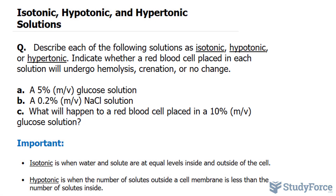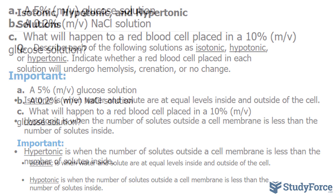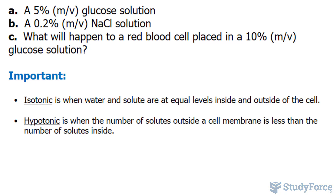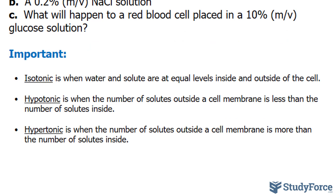The first one we'll look at is a 5% mass per volume glucose solution. It's important that we know the definition for these three words. Isotonic is when water and solute are at equal levels inside and outside the cell — the cell is at equilibrium and we expect no change. A hypotonic solution is when the number of solutes outside the cell membrane is less than that found inside the cell. And hypertonic is when the number of solutes outside a cell membrane is more than the number found inside.